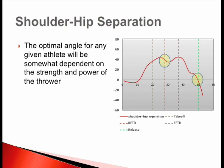This means that during the period in time between rear foot touchdown and front foot touchdown, this athlete is actively accelerating the hip — especially the right side hip — and leaving the right side shoulder behind, essentially creating greater trunk torsion, or greater shoulder-hip separation. The athlete actually reaches a peak shoulder-hip separation right around front foot touchdown.